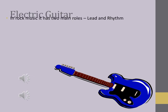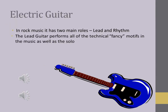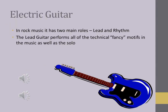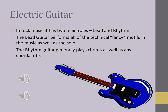The electric guitar. In rock music it has two main roles: lead and rhythm. The lead guitar performs all of the technical or fancy motifs in the music as well as the solo. The rhythm guitar generally plays chords as well as any chordal riffs.